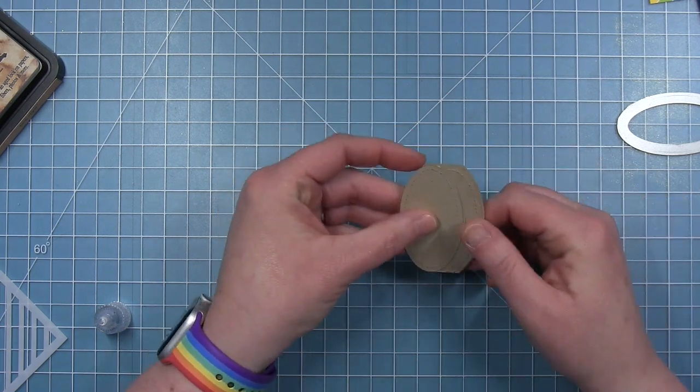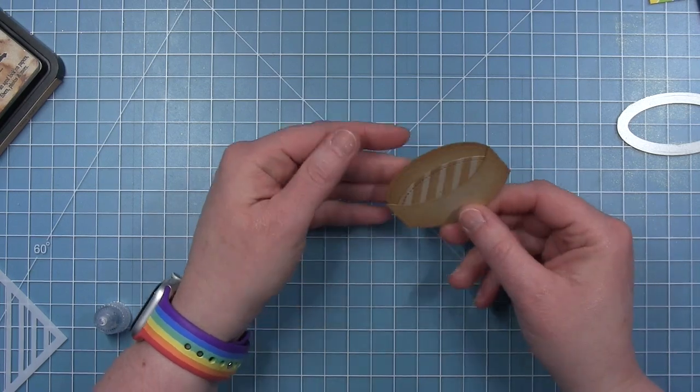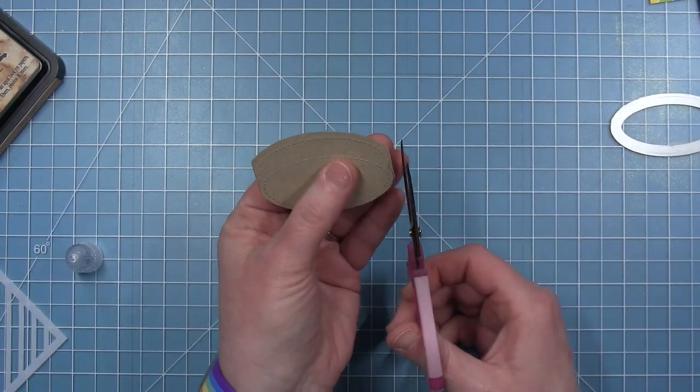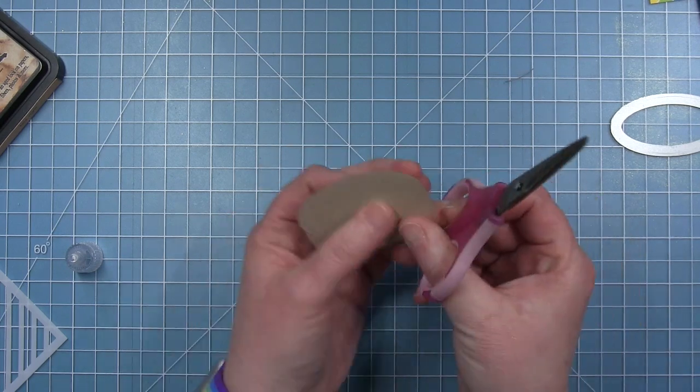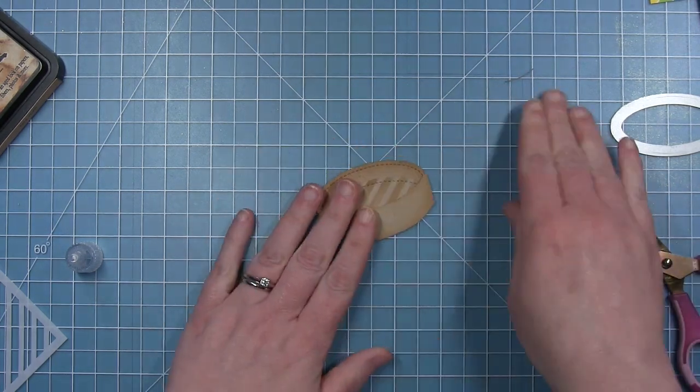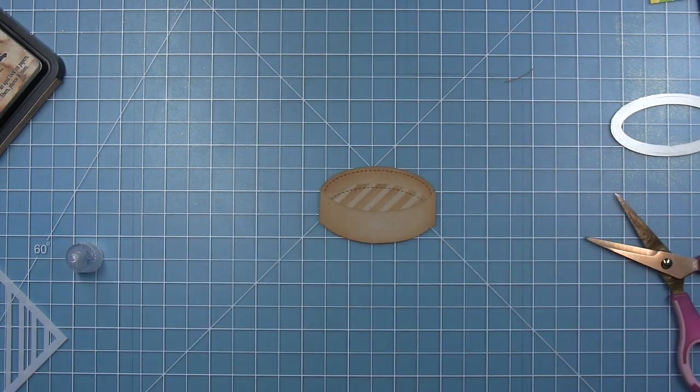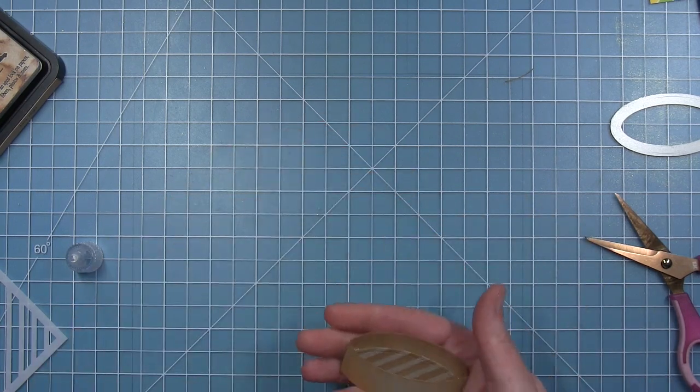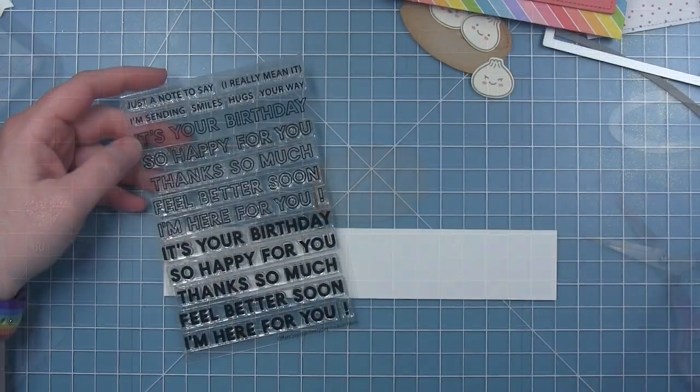It was super easy to make, and thank you to Callie for sharing with me how she created this. I am going to trim off a little bit on the edges where it goes past my oval. Better to have it too big and trim it down than to have it too small and need to cut a new one.